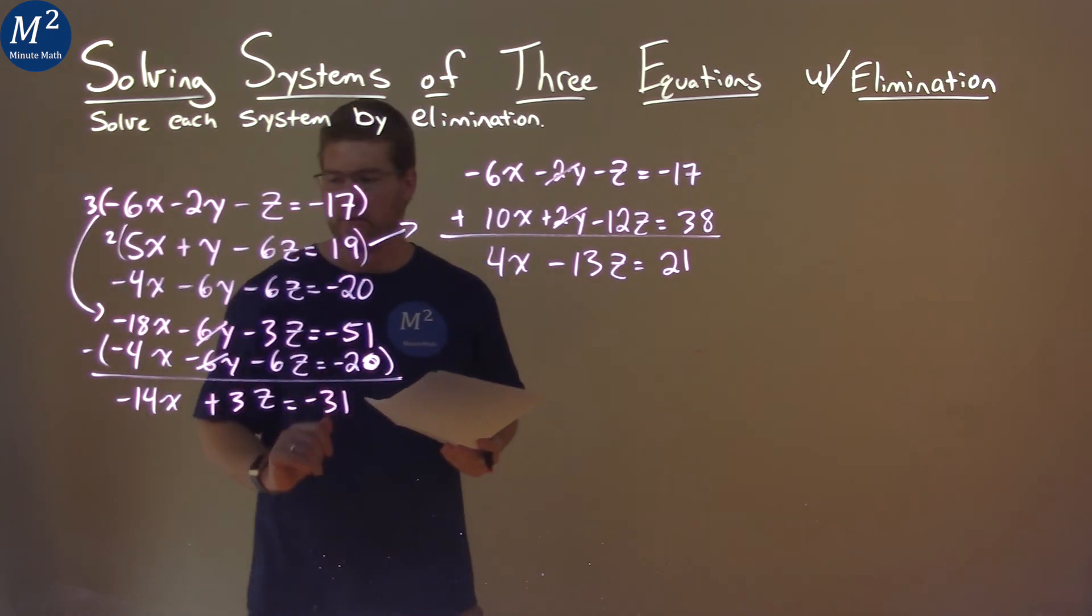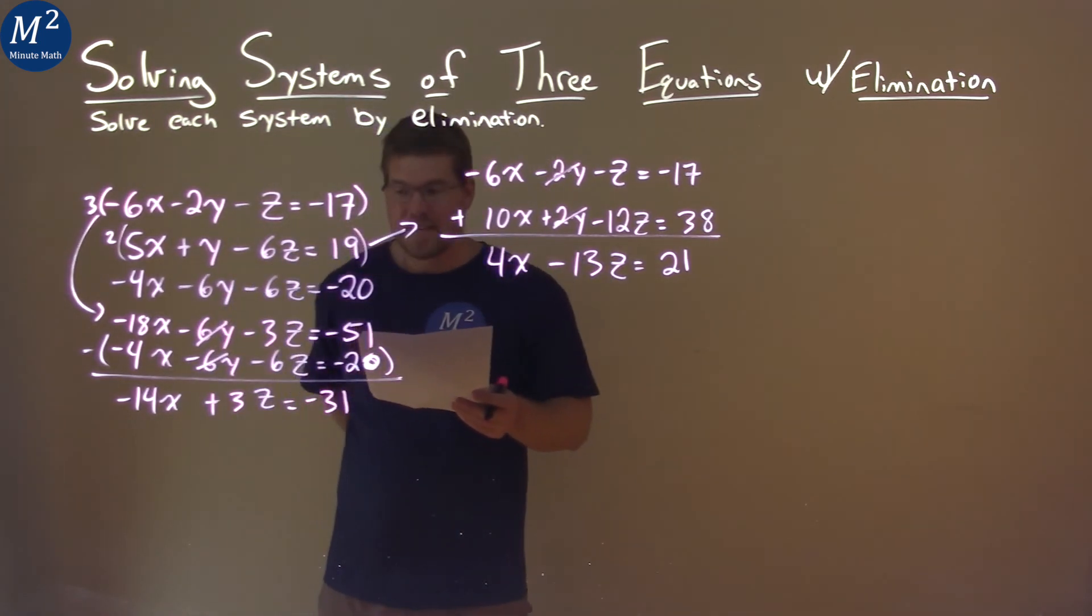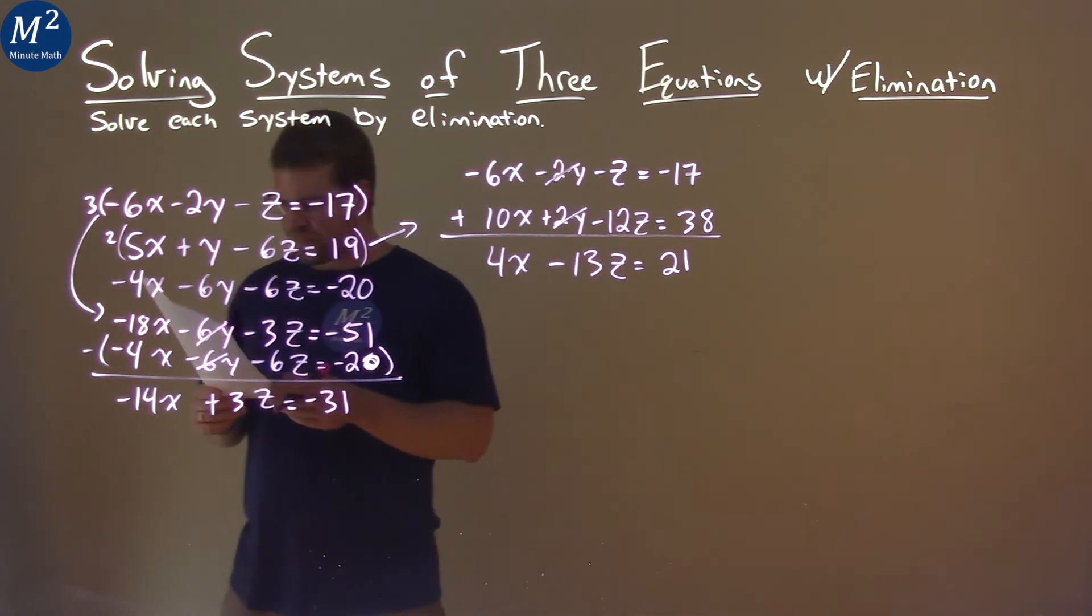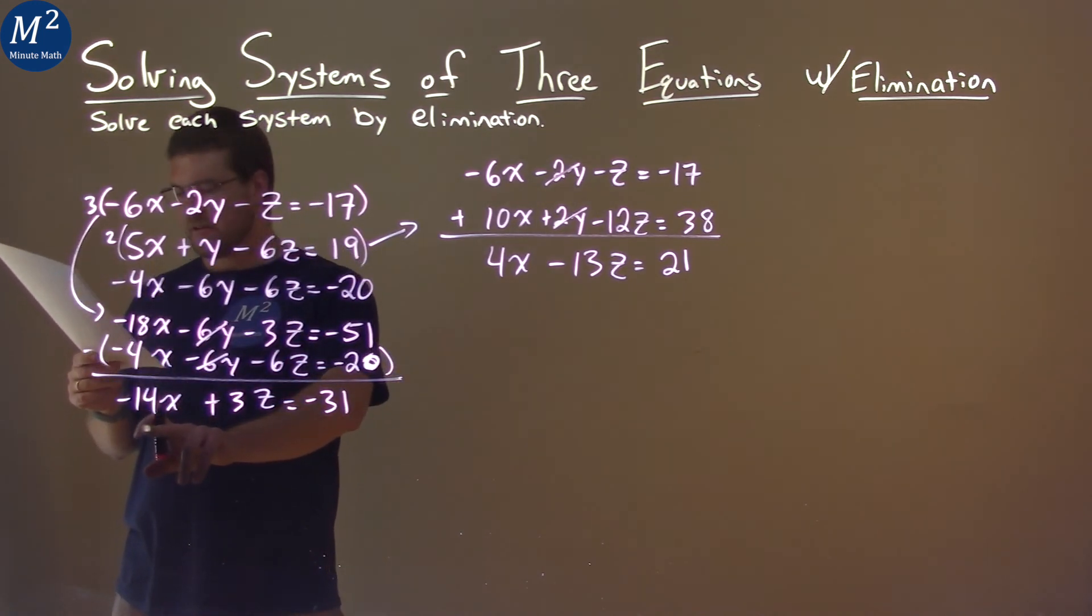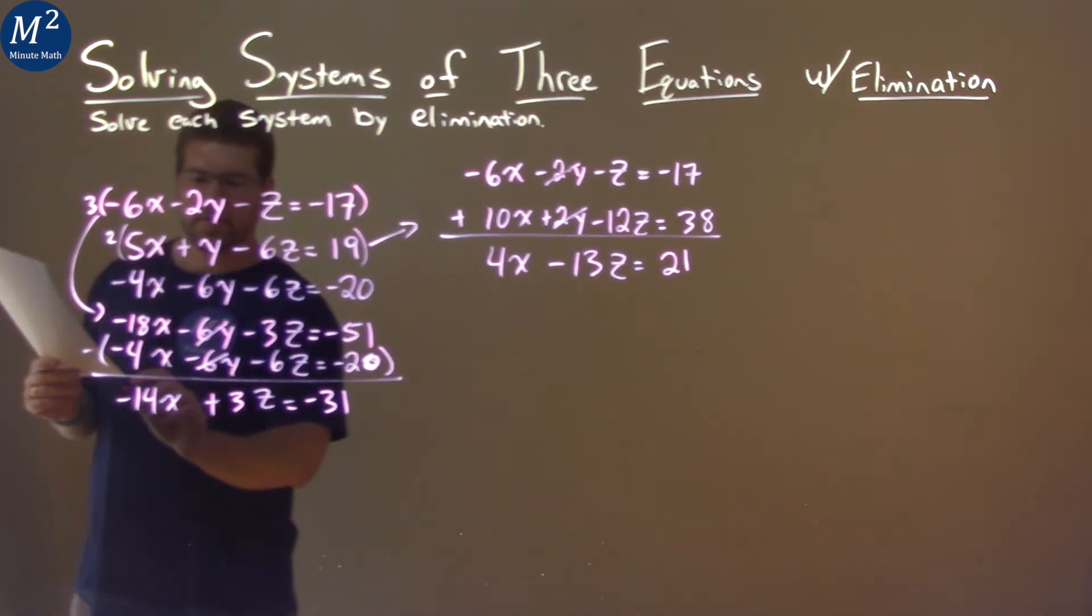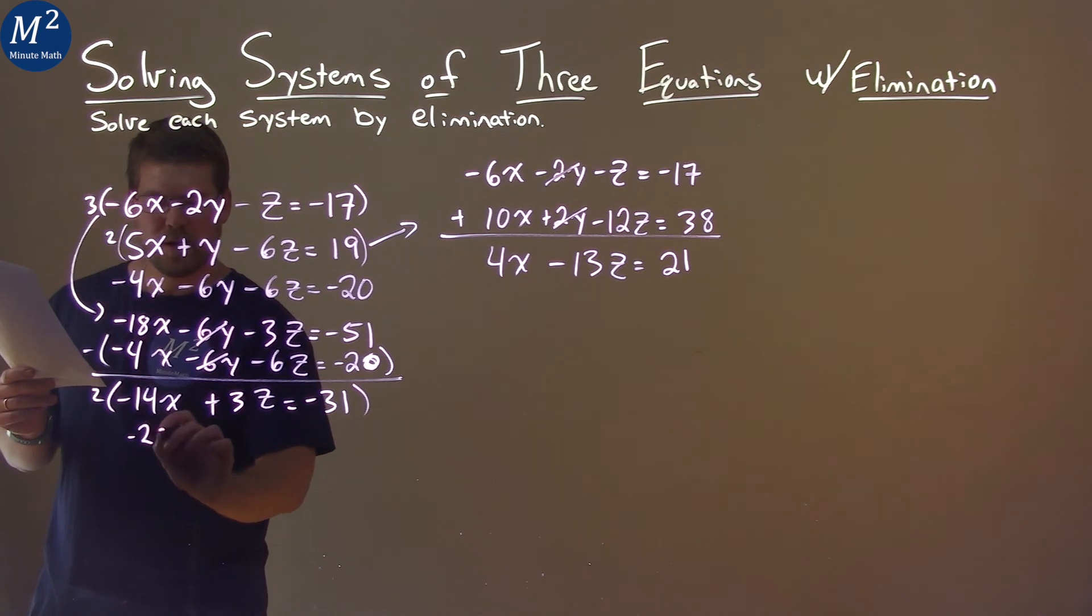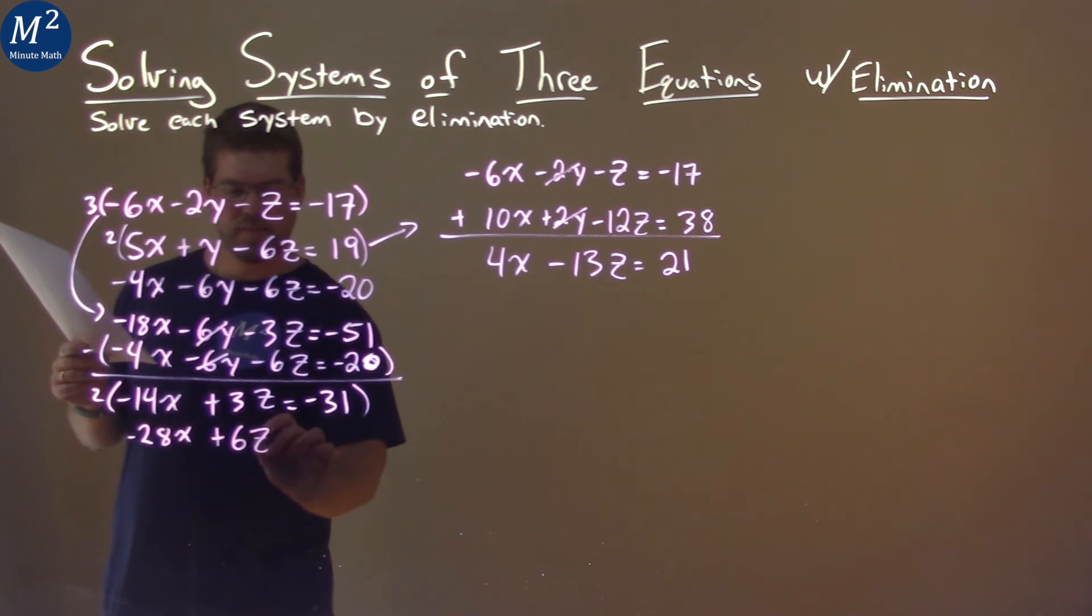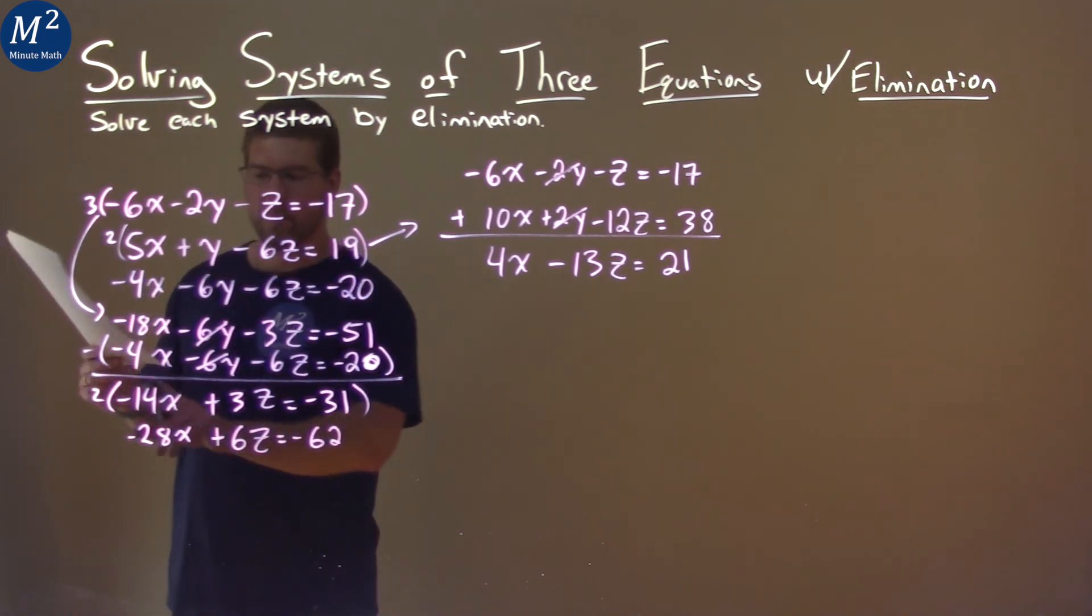Alright, so now we have this equation that has x and z, and this equation has x and z, and we need to adapt them to find a way we can eliminate a variable. Well, I can see here if I take 14 times 2, I get 28, and 4 times 7, I get 28, and we can eliminate stuff there. So I take this equation here, multiply it by 2, and I'm left with negative 28x plus 6z equals negative 62. Multiply 2 to all parts.